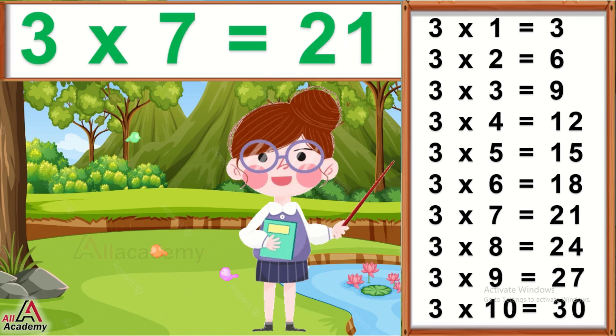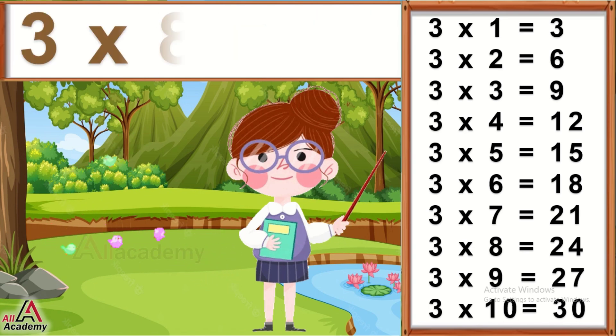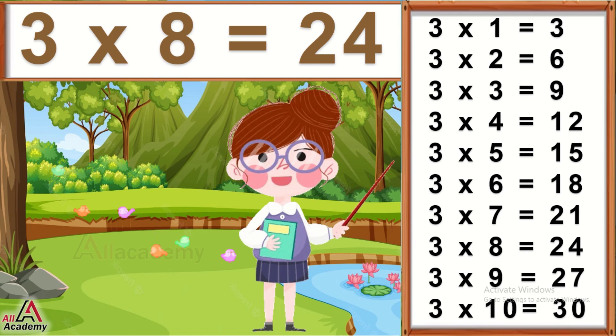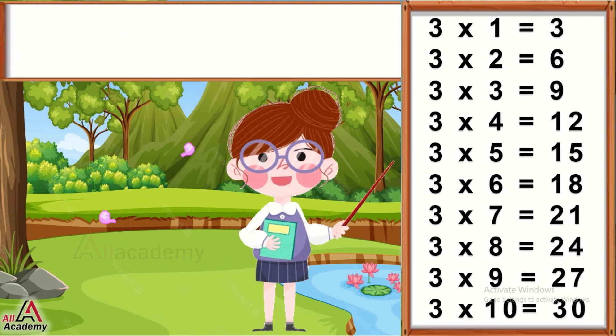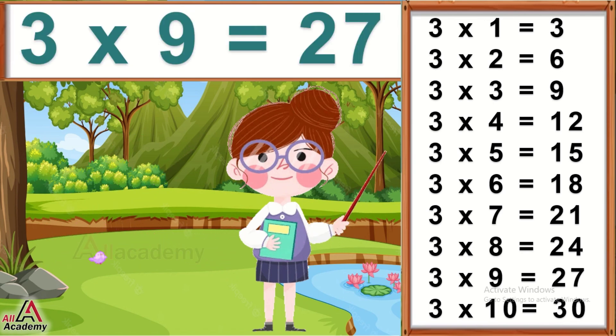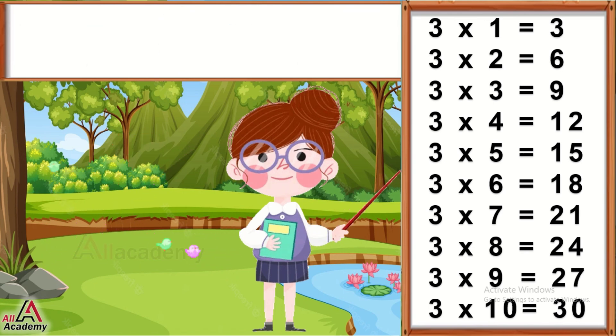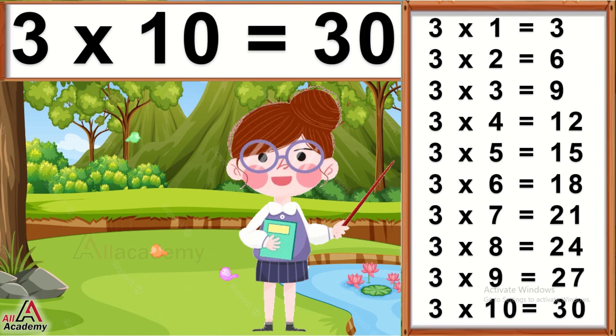Three sevens are twenty-one. Three eights are twenty-four. Three nines are twenty-seven. Three tens are thirty.